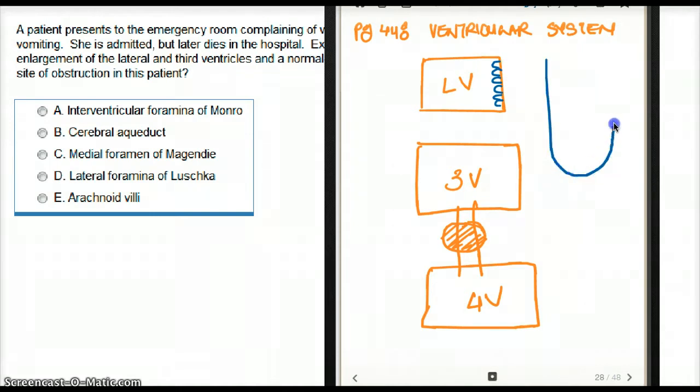So they look like so. These invaginations are made up of columnar cells—I should make this more columnar-like. These columnar cells are called ependymal cells.